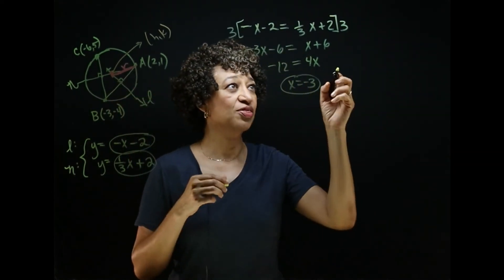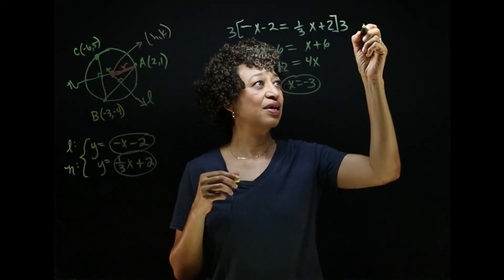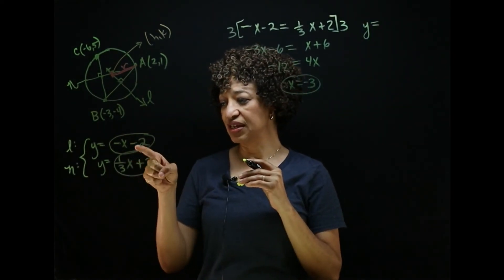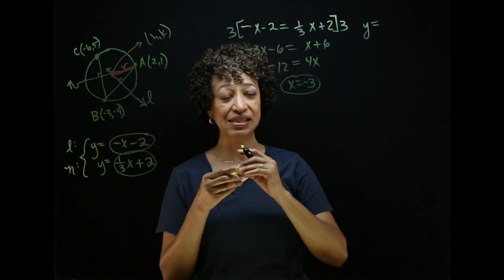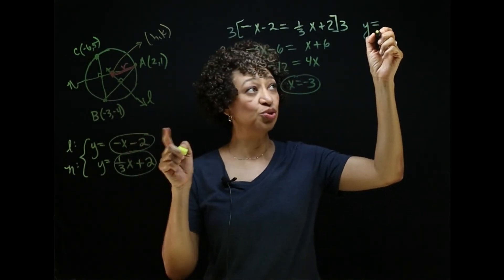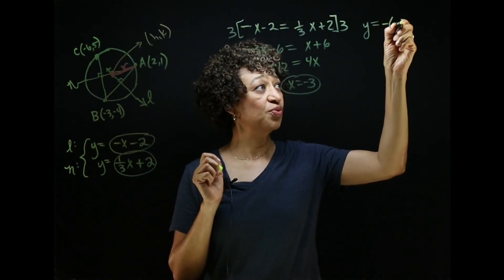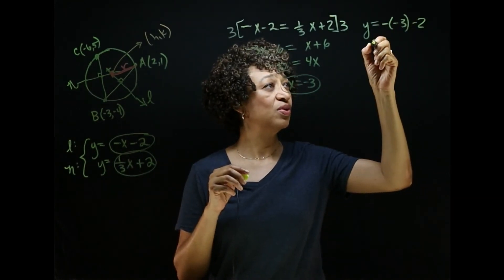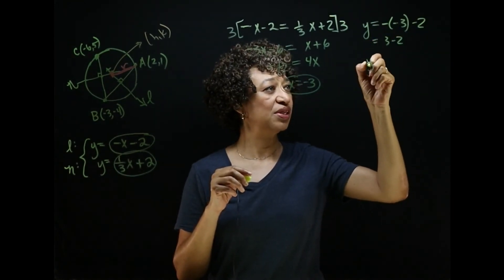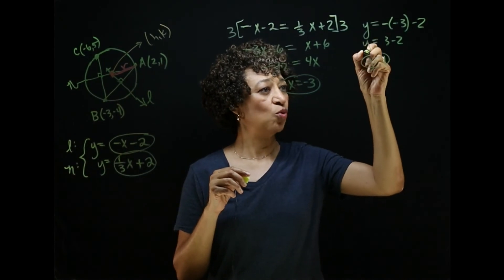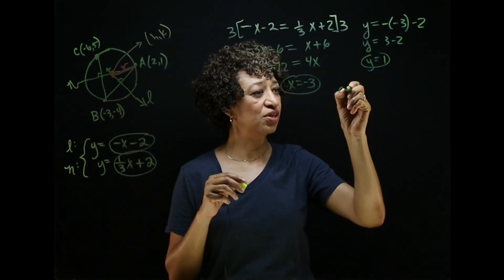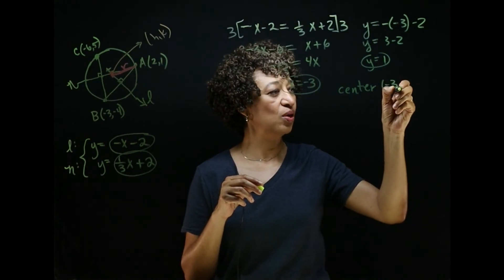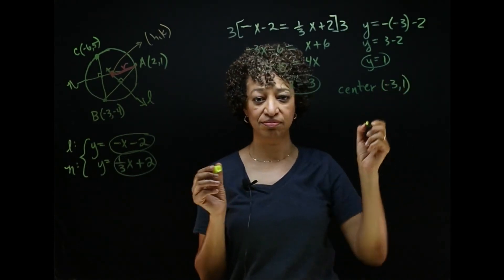To get the y-coordinate, I'll plug x equals negative three into the first equation. So y equals negative (negative three) minus two, which is three minus two, which equals one. The center of the circle is (negative three, one).